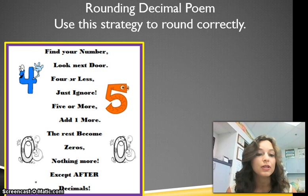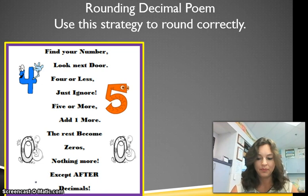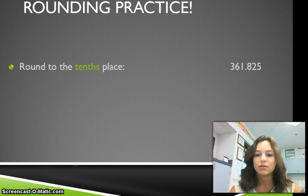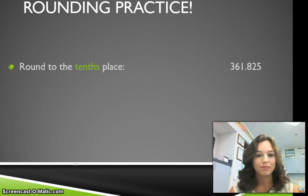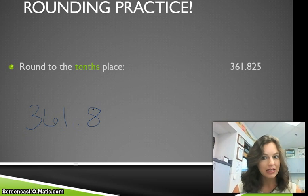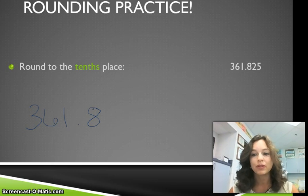Remember: find your number, look next door, 4 or less just ignore, 5 or more add one more, the rest become zeros, nothing more — except after decimals, where you don't have to add zeros because they add no meaning. Let's try again: round 361 and 825 thousandths to the tenths place. Pause this and get your answer. Did you put 361 and 8 tenths? That 2 is below 4, so we're not going to round the 8 up.